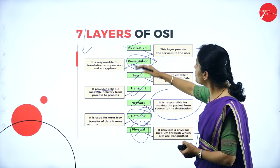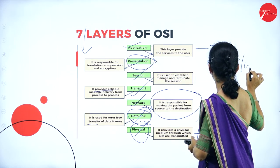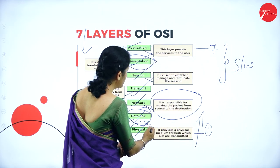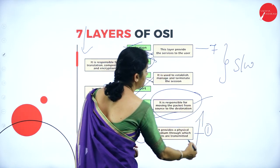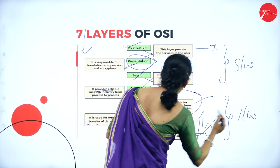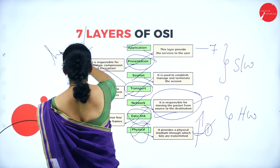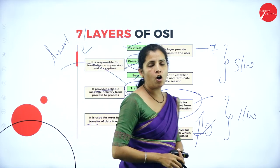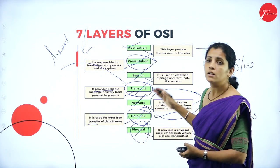The top three layers — application, presentation, and session — are the software layers. The bottom three layers — network, data link, and physical — are the hardware layers. The transport layer is considered the heart of data communication.